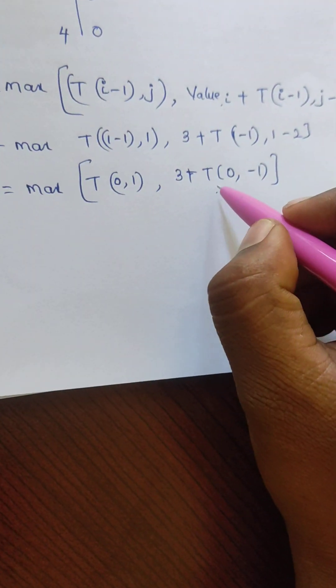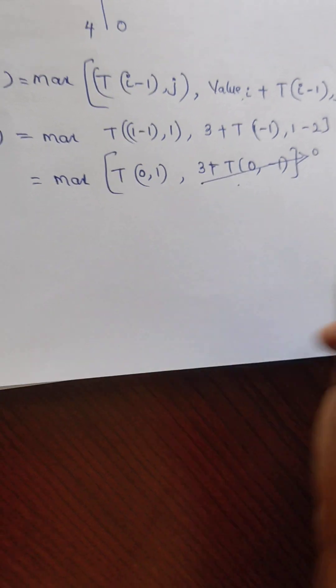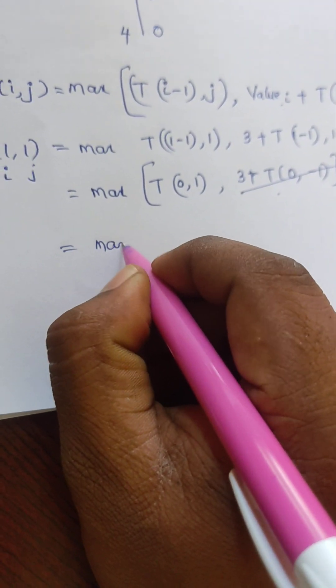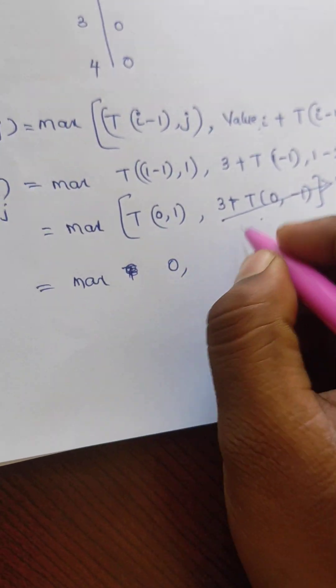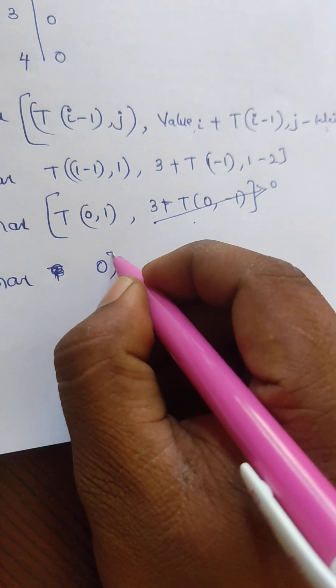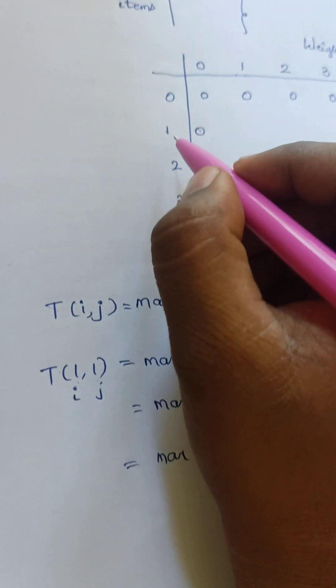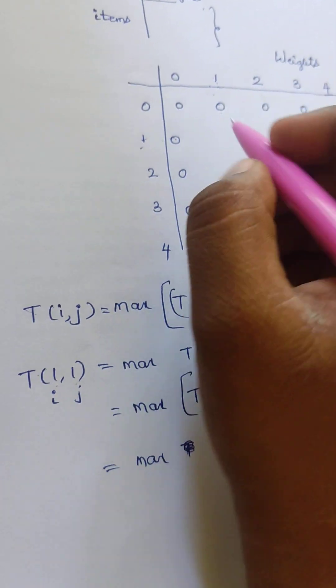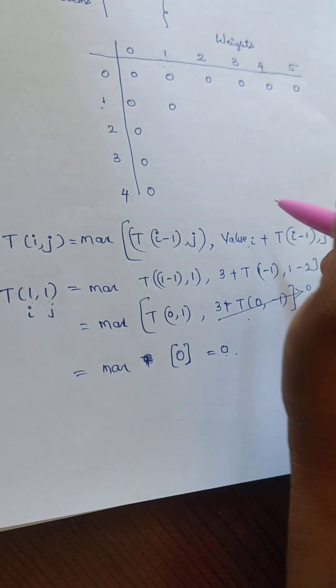When the index is negative, we never have negative values in the matrix, so we consider T(0,−1) as 0. Therefore we have max of T(0,1)=0 and 3+0=3, but since both arguments reduce to max of 0, T(1,1) equals 0. So T(1,1) = 0, and we continue performing all actions across the matrix representation.